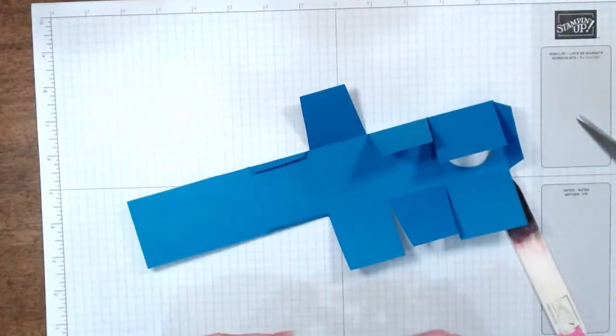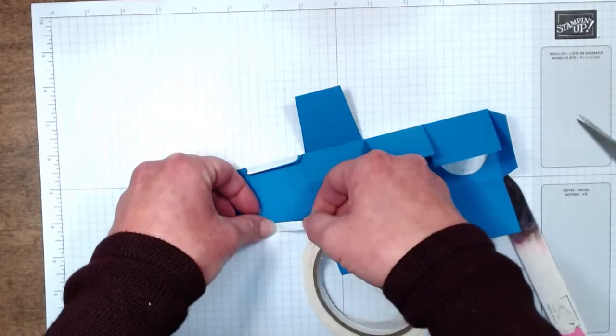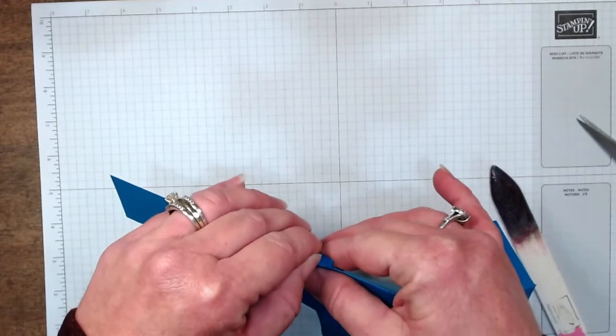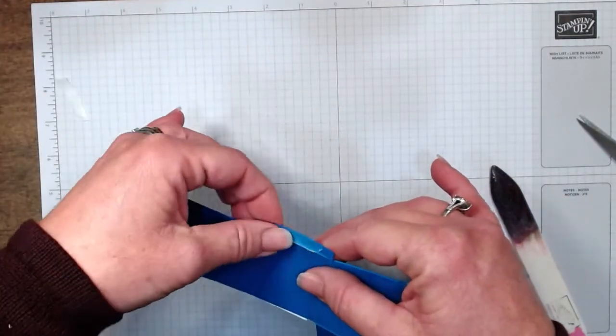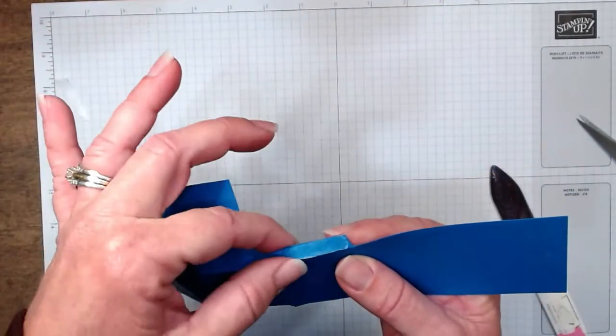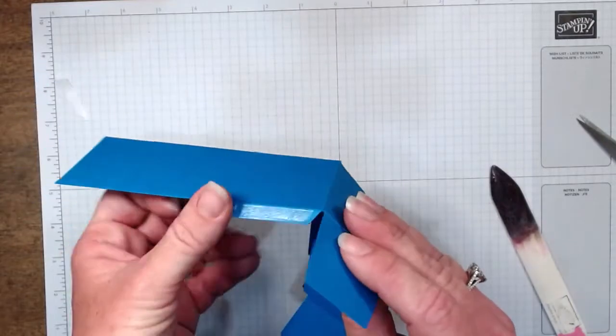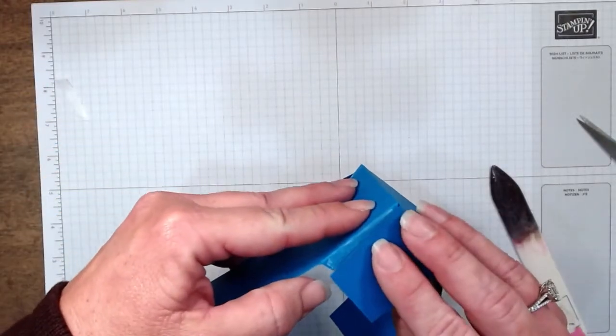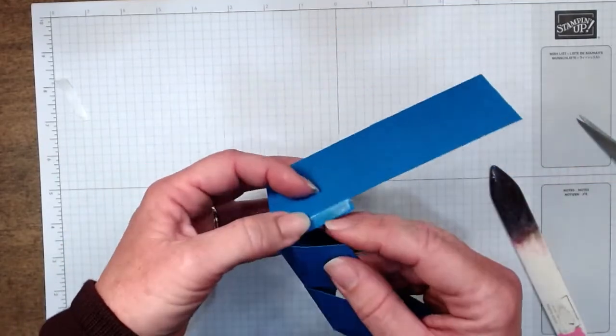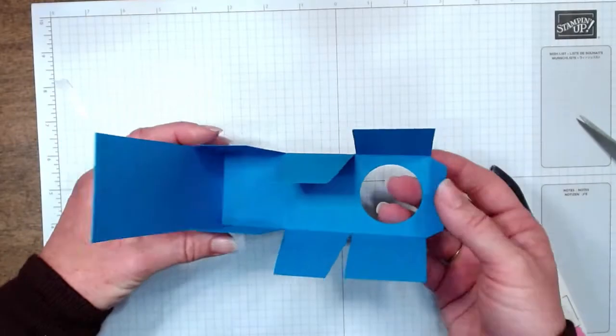So I went ahead and folded on all of our score marks. So I am going to grab a little bit of tear and tape. I'm going to put tear and tape on these little flaps. And if it hangs over, it's not tragic. We're just going to roll it back over on itself. Peel this off. So now, all we have to do is start putting our box together.